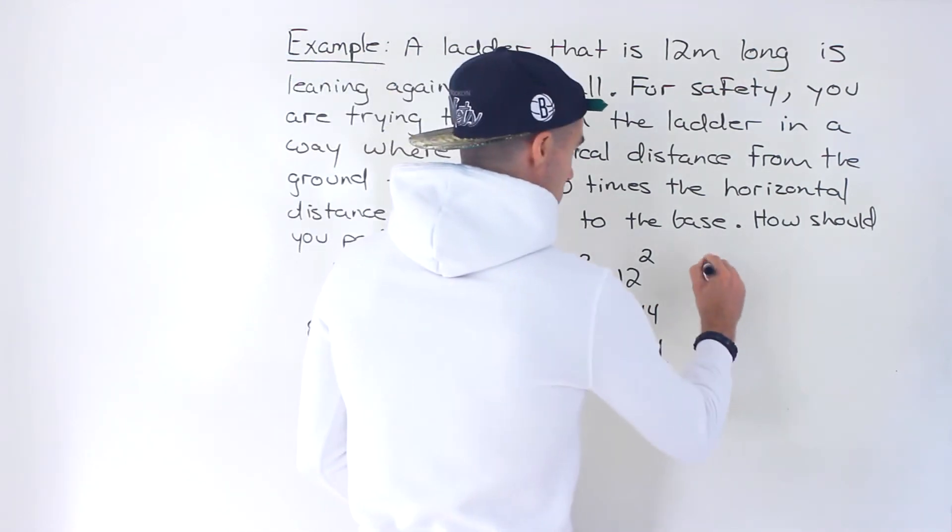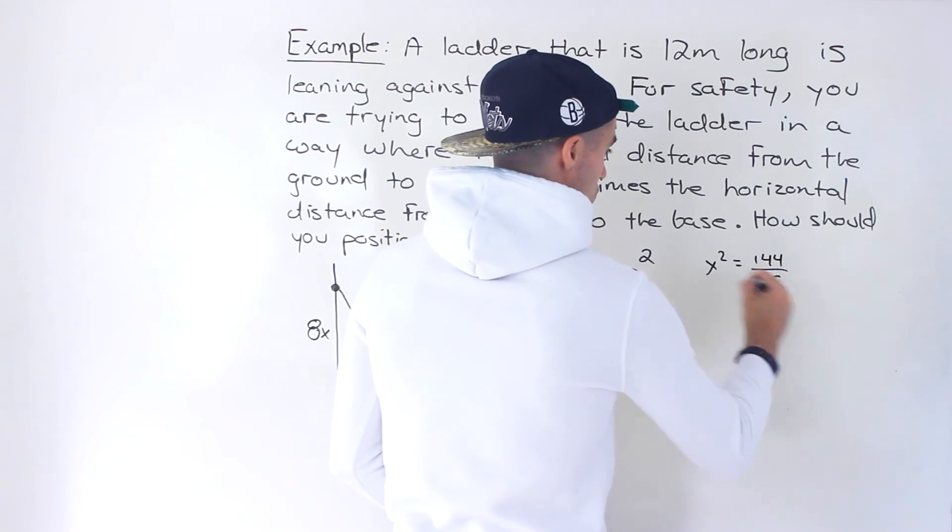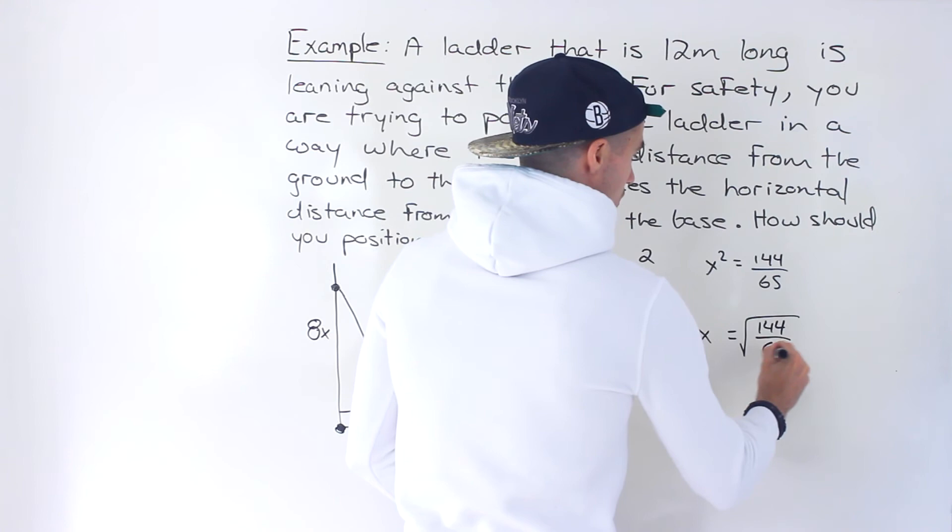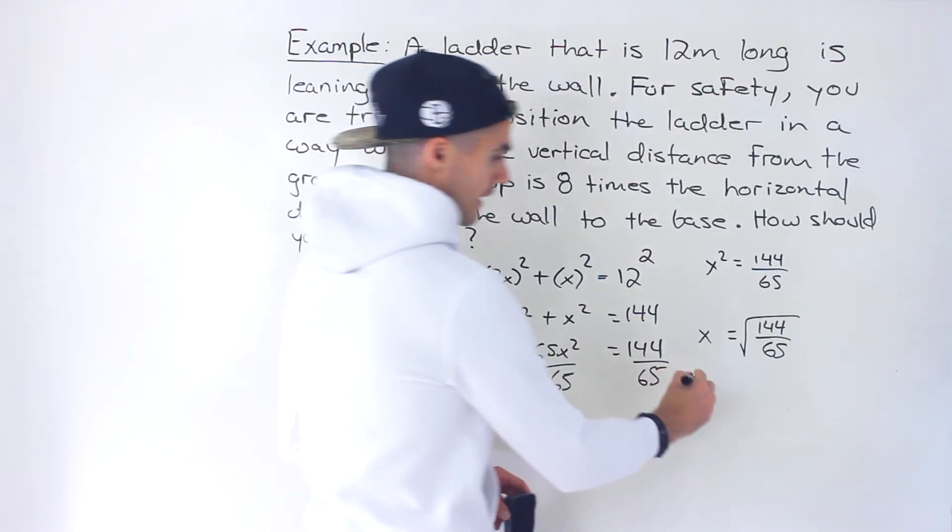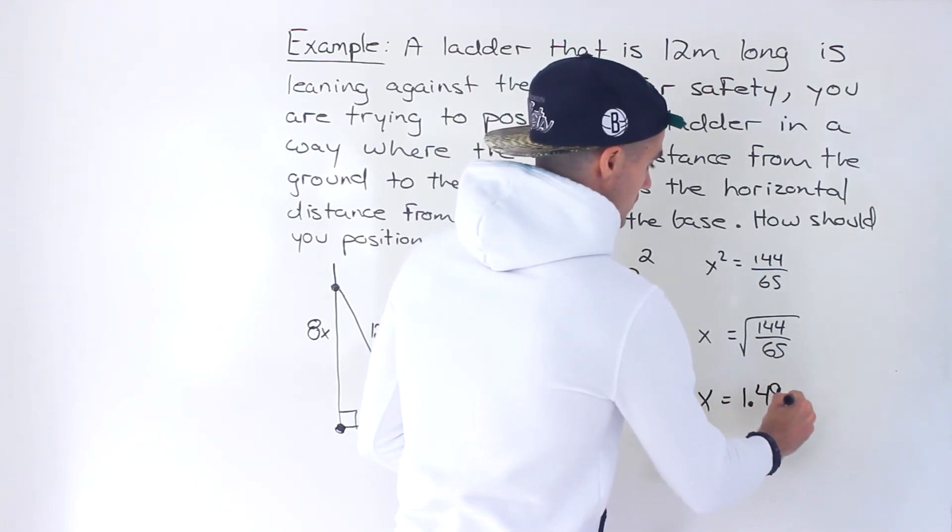We end up with x squared equaling 144 over 65. Then we square root both sides to get that x value by itself, and when we do that algebra we end up with 1.49 meters.